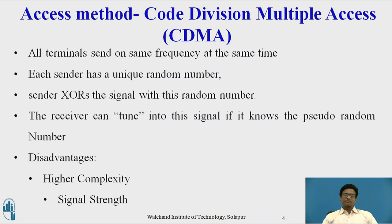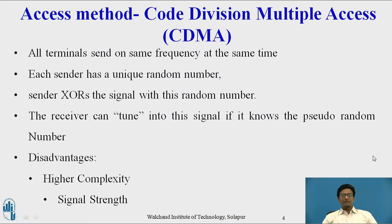In the CDMA scheme, all terminals send on the same frequency at the same time using the bandwidth of the transmission channel. Each sender has a unique random number and this sender XORs the signal with the random number. The receiver can tune into the signal if it knows the pseudorandom number. The advantage of CDMA is higher complexity of receiver, as the receiver cannot just listen into the medium and start receiving if there is a signal — the receiver has to know the pseudorandom number.